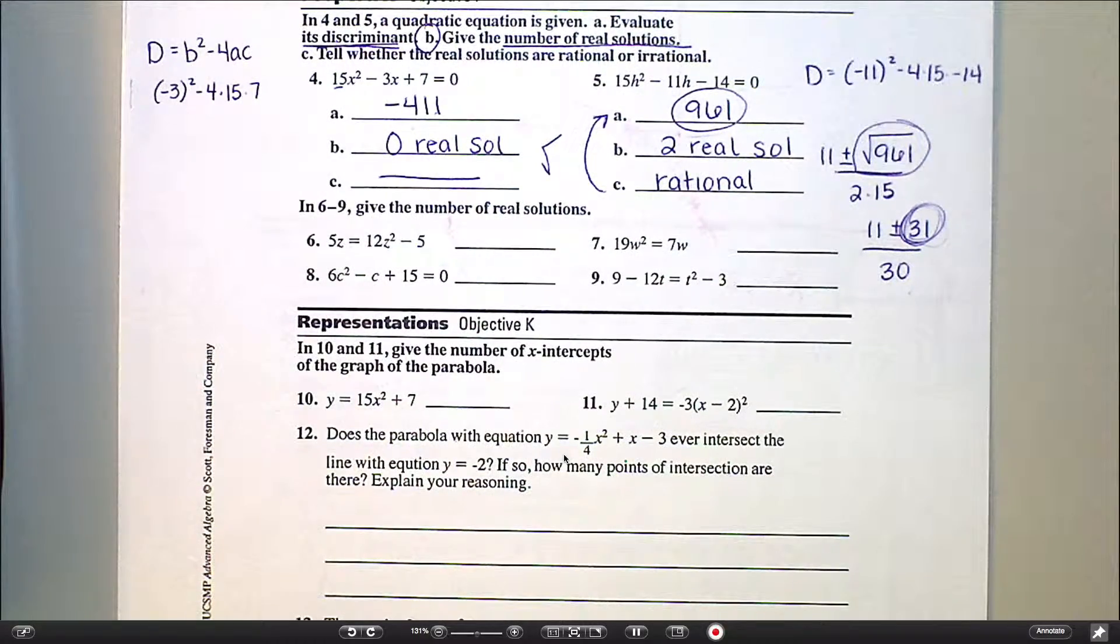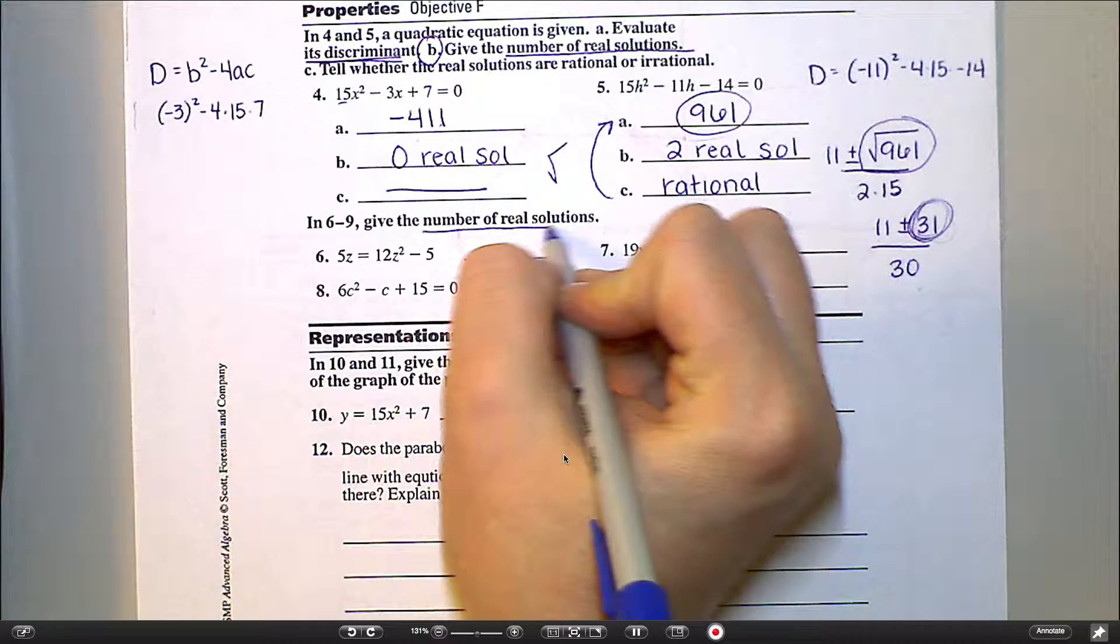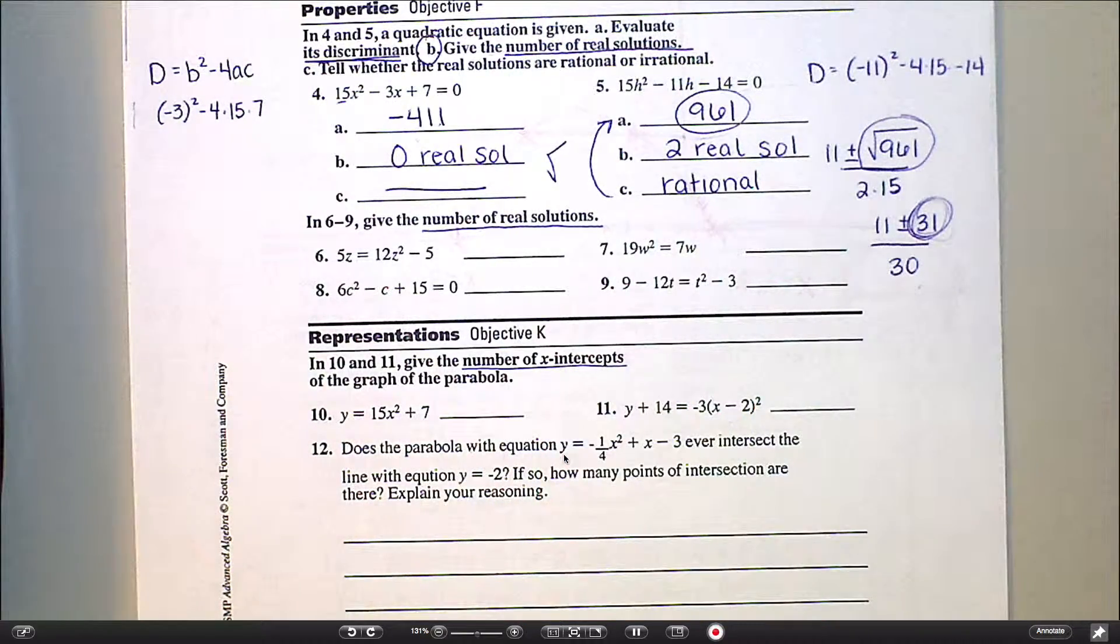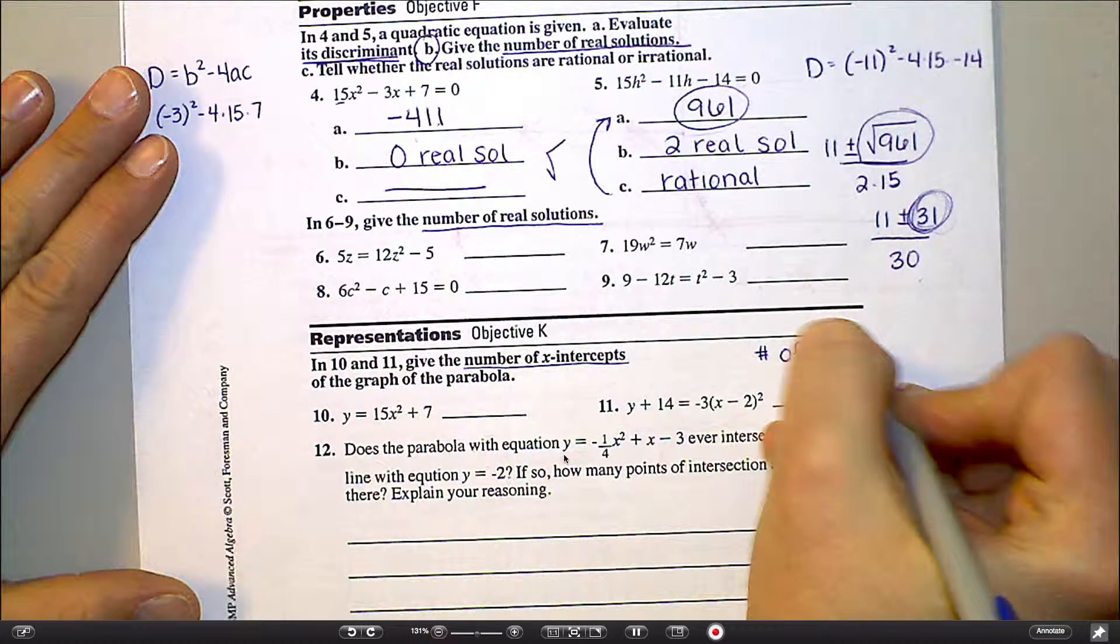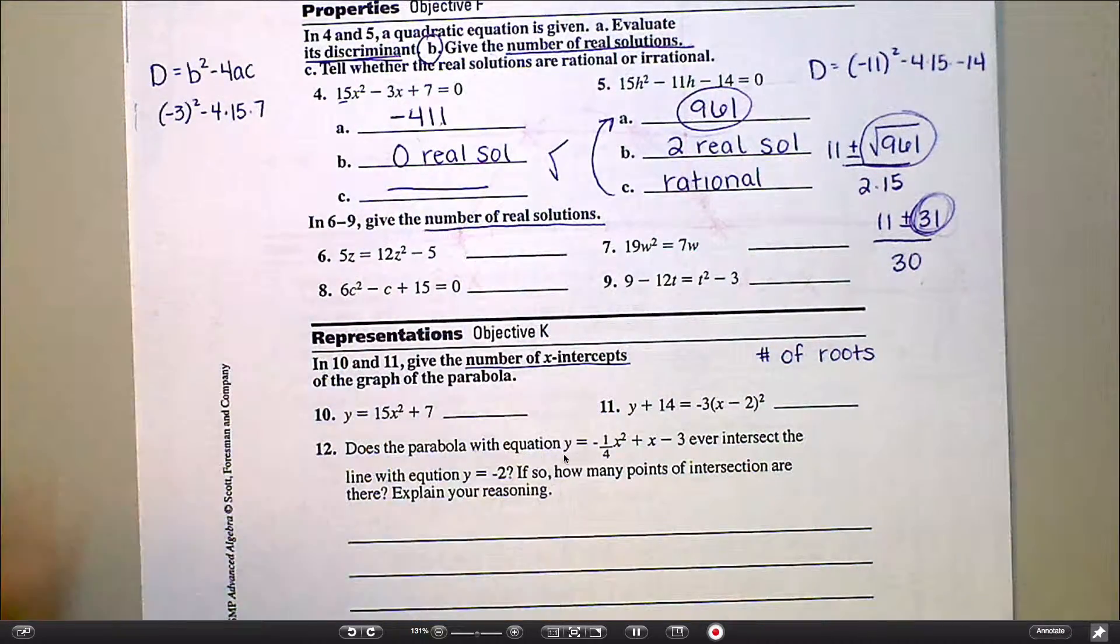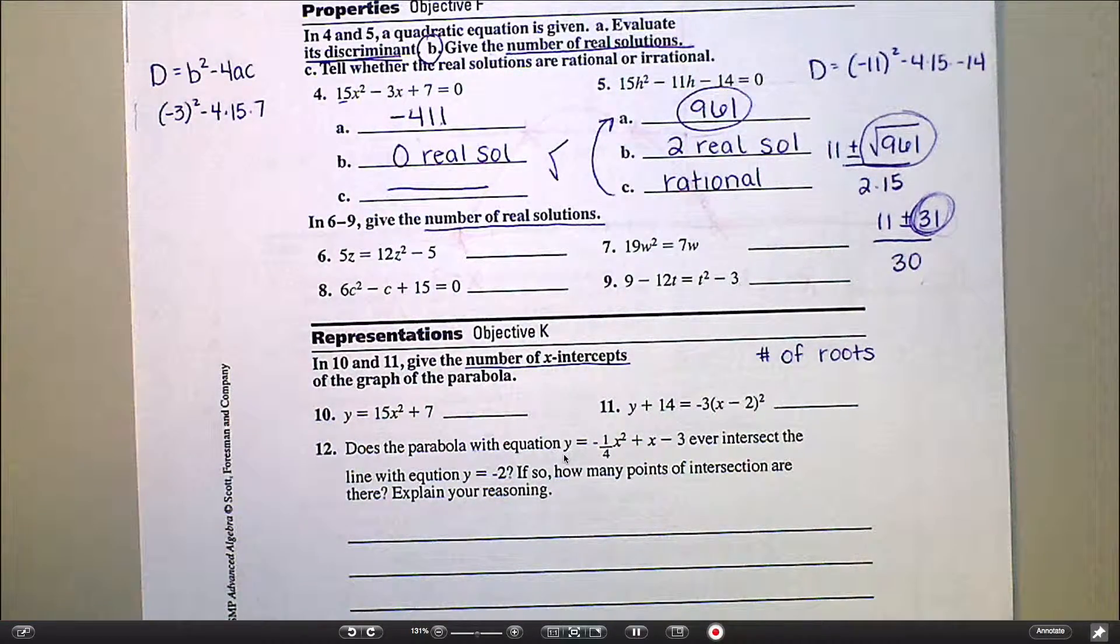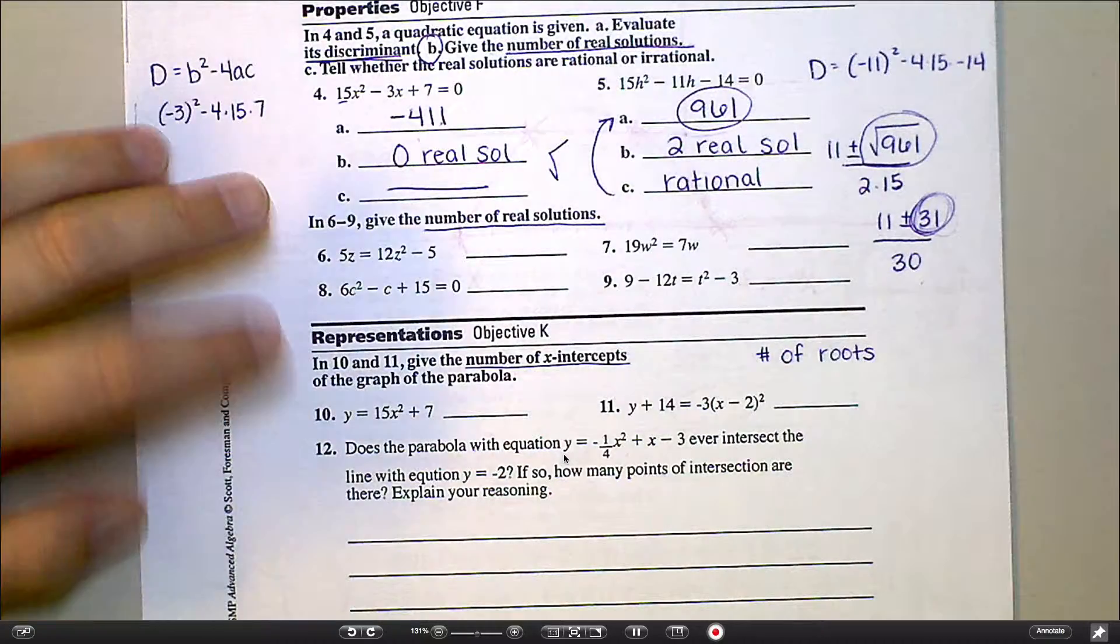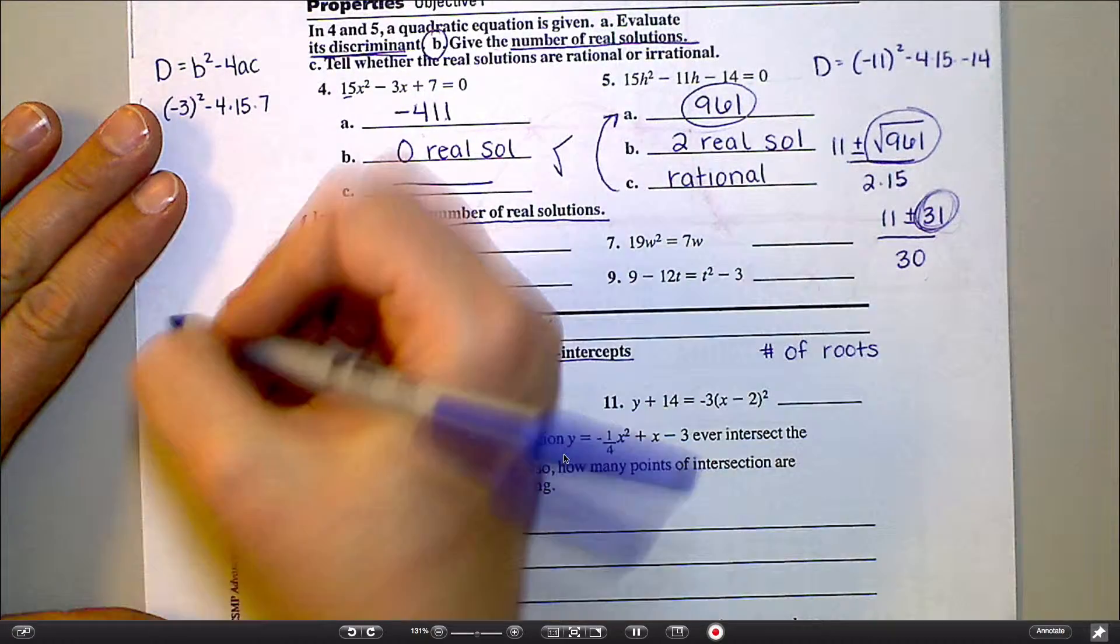So just real quick, 6 through 11, I want you to notice the directions. This says the number of real solutions, which is the same as part B back here, number of real solutions. This asks for the number of x-intercepts. I could also ask you for the number of roots. That would be a valid question. All of those questions are asking the same thing. They're asking this. They're asking, how many answers am I going to get if I do the quadratic formula? And so all I really have to do is the discriminant. But you have to remember that before you can do the discriminant, you need to be in standard form. So for both of these sections, for all of this, 6 through 11, you're going to find the discriminant.